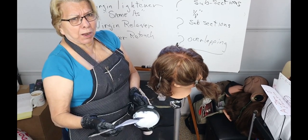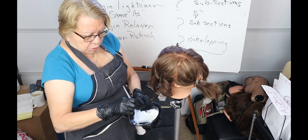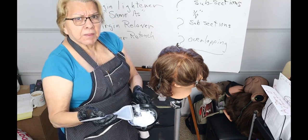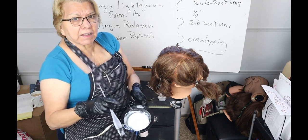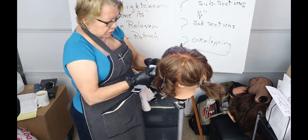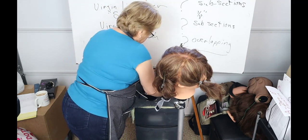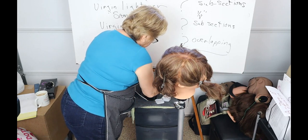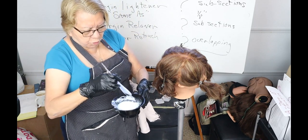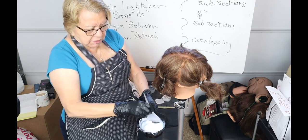I'm going to pour two ounces of 20 volume developer in with the color. Looking at it, it's right at the four-ounce mark — it will mix nicely with no strings. For a virgin application, you want to start away from the scalp. The reason is that everyone has natural heat at the scalp, which makes color process faster.